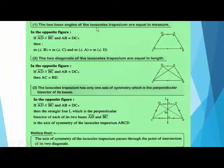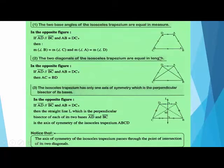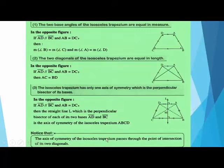The two base angles of the isosceles trapezium are equal in measure when its two legs are equal in length. Also, the two diagonals of an isosceles trapezium are equal in length. The isosceles trapezium has only one axis of symmetry, which is perpendicular to the two bases and bisects them. This axis divides the figure into two congruent parts and passes through the point of intersection of its two diagonals.